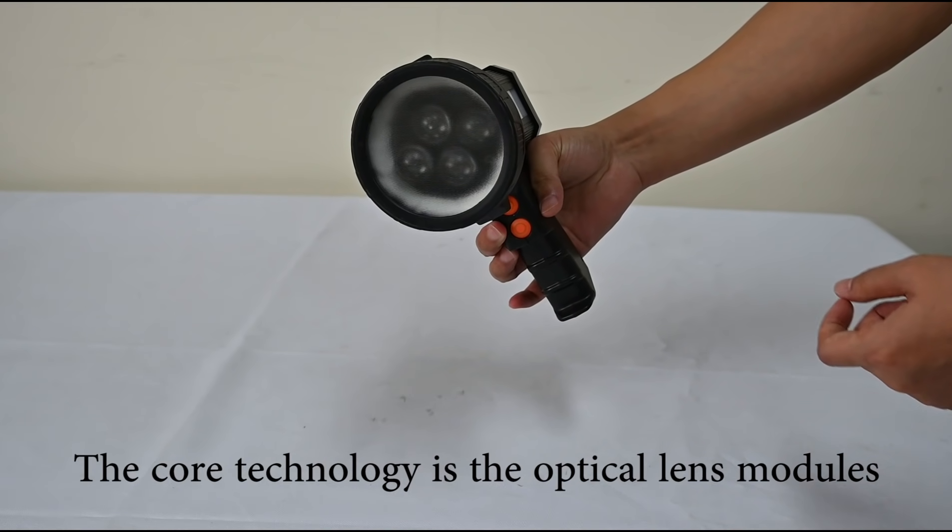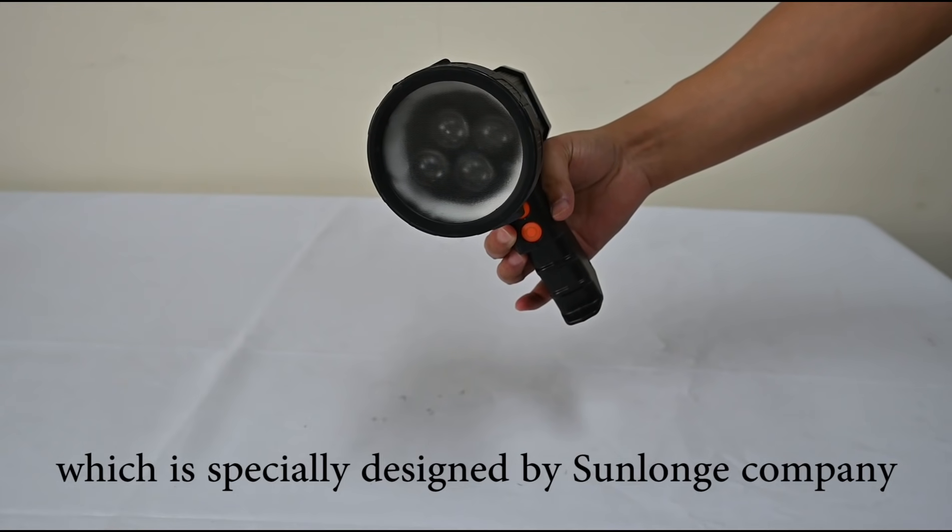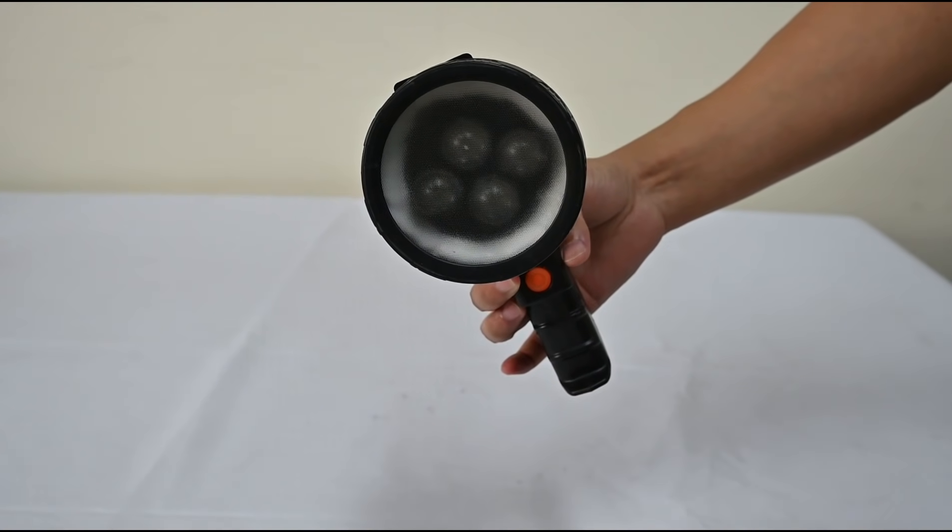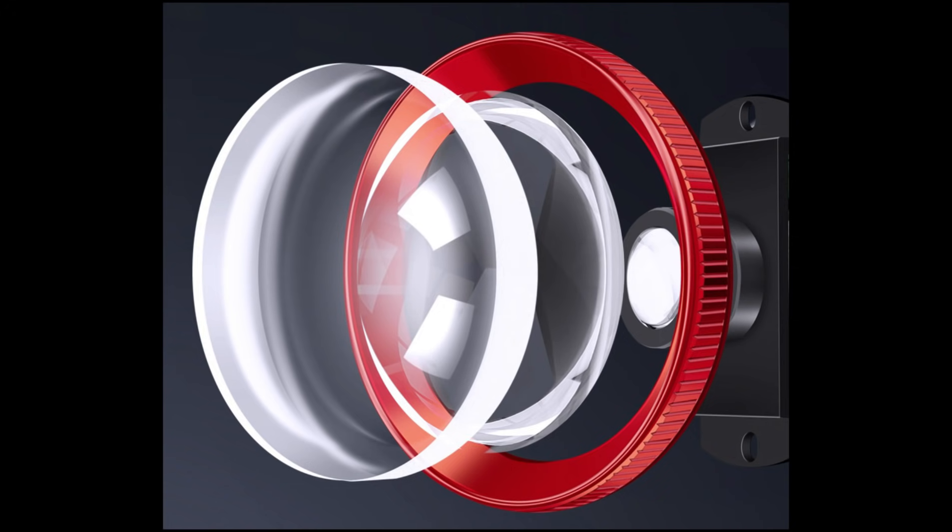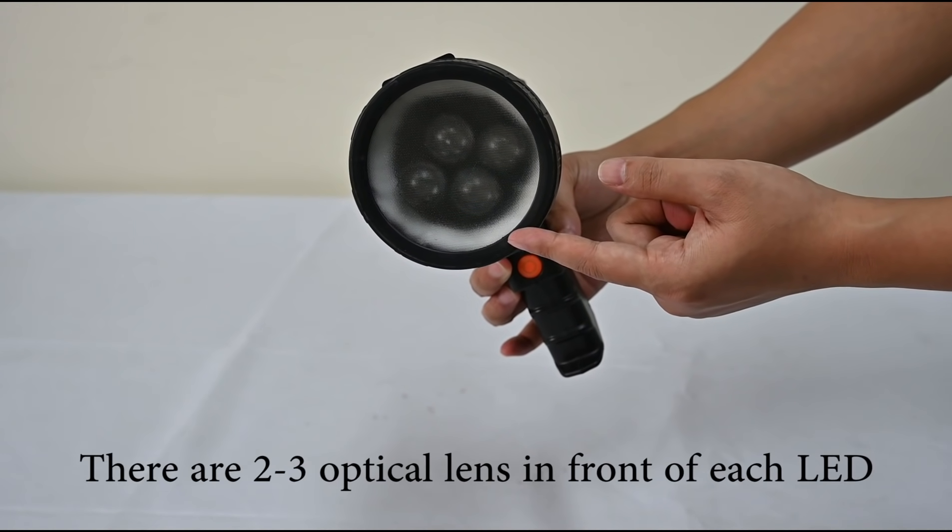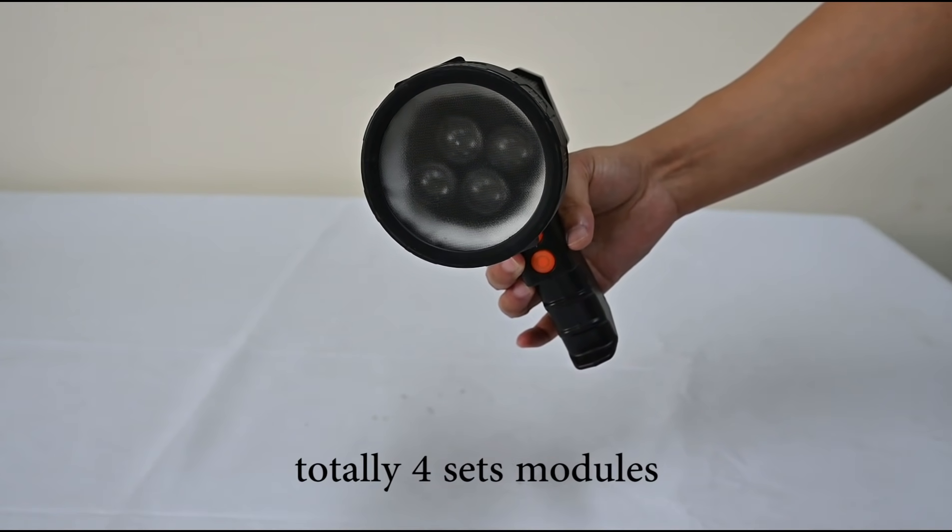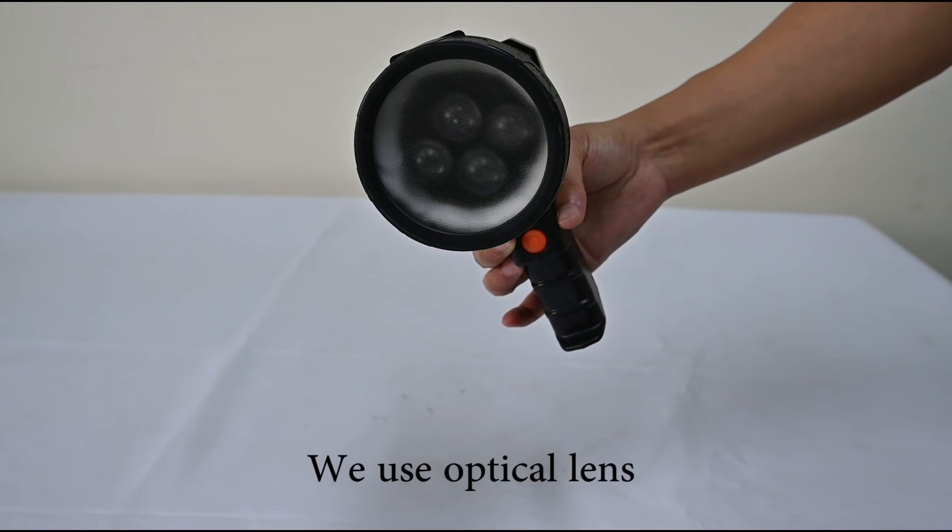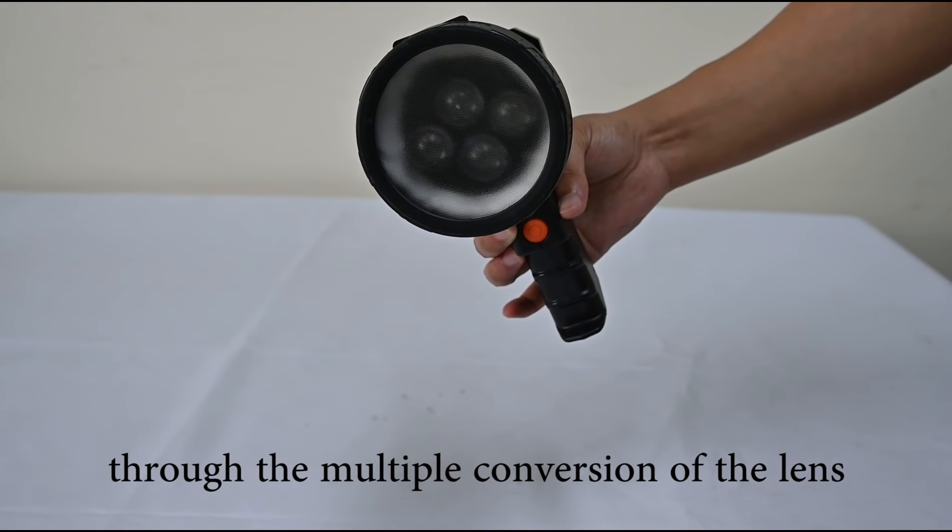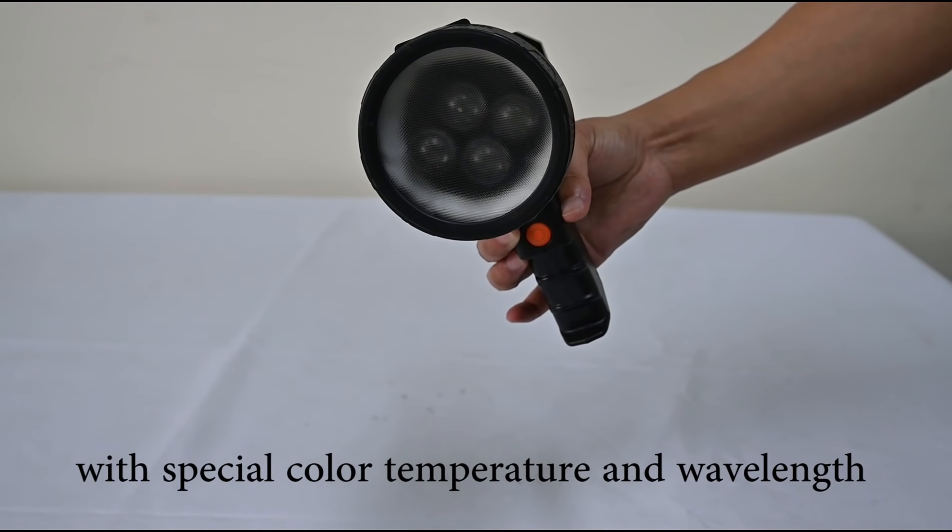The current technology is the optical lens module, which is specially designed by Sanon company. There are 2-3 optical lenses in front of each LED. Totally 4 cell modules. We use optical lenses through the multiple convections of the lens. We can make inspection light with special color temperature and special wavelength.